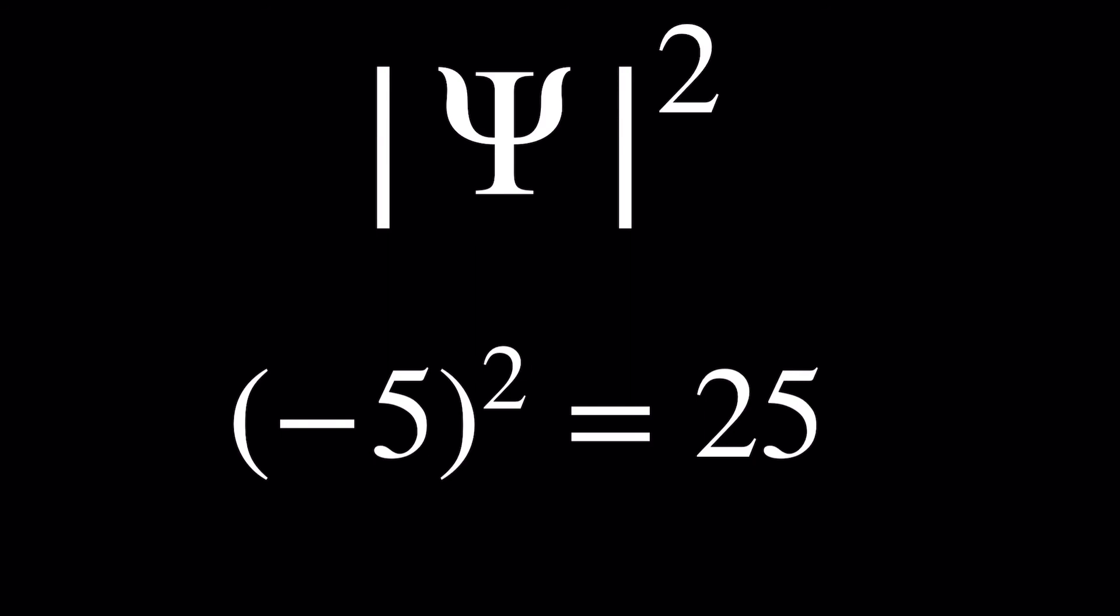Well, yes, squaring makes any real number positive, but the outputs of the wave function are essentially always complex numbers, the numbers with the little i's in them. So this magnitude sign is really a modulus sign, that is finding the distance of the point on the complex plane to the origin.